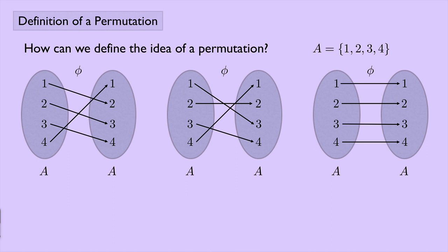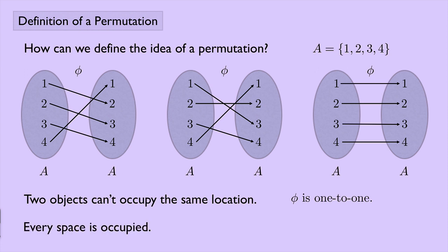So these are all examples of rearranging things or permutations. So two things to note. First of all, two objects can't occupy the same location. In other words, phi is one-to-one. Think about what that means. Two objects can't be in the same place, so phi is one-to-one. In other words, you can't have one mapped to two and three mapped to two. Every space is occupied. This is another way of saying that phi is onto. If you look at the second set of As there, everything there has something mapped to it. So this is another way of saying that phi is onto.